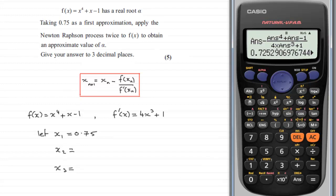So we've got that as the decimal. So if we enter that as 0.725290 and so on.